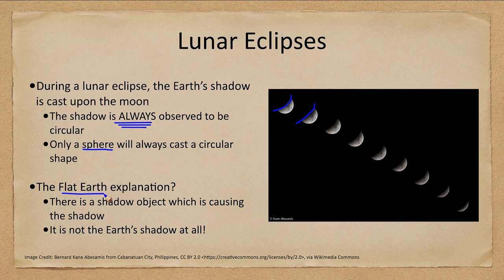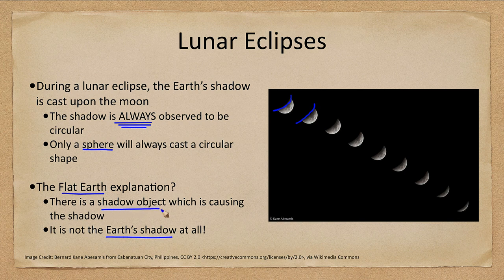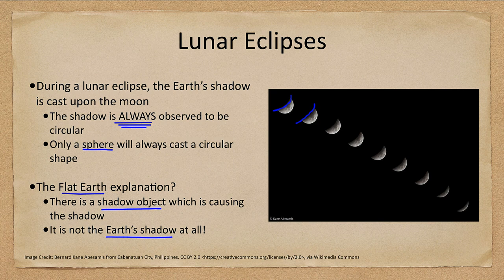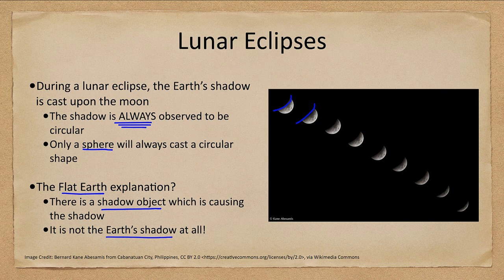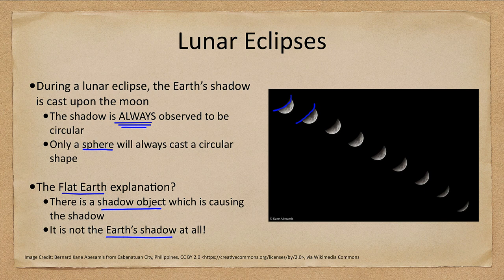The explanation from flat Earth is that it's not the Earth casting the shadow at all. There's another object, a shadow object, which is causing the shadow out in space. That's what's casting the shadow on the moon during an eclipse. That's why it doesn't have anything to do with the Earth causing the shadow. There's another unseen object that we cannot see that is actually casting this shadow upon the moon.